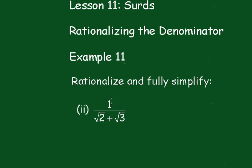Okay, now in this one we've got 1 over root 2 plus root 3. Now what I'll do here before I start - you don't have to do this, but it just makes life a little bit easier - we'll just change these ones around.